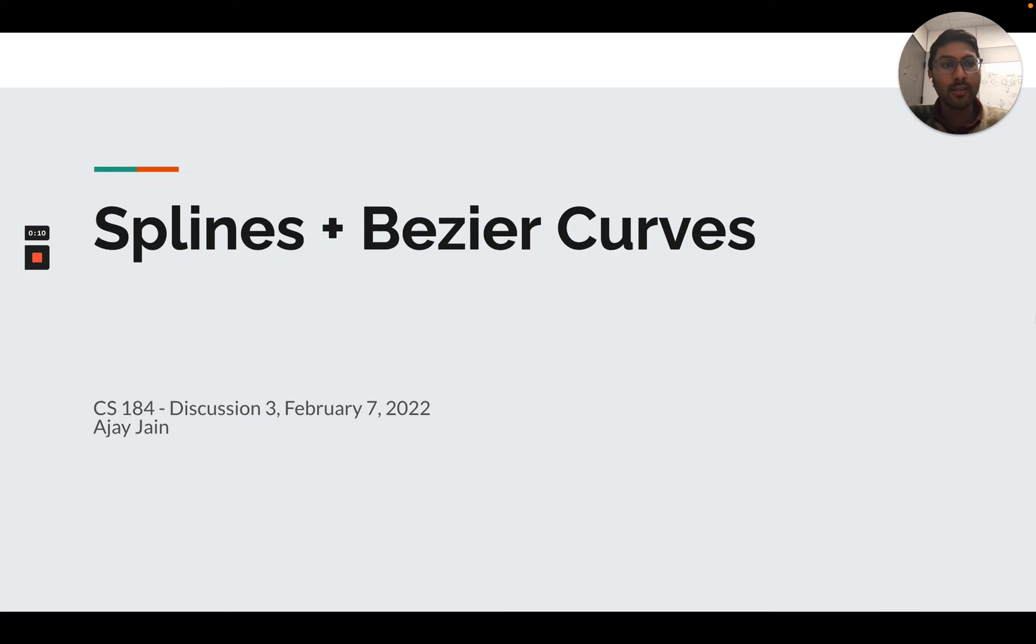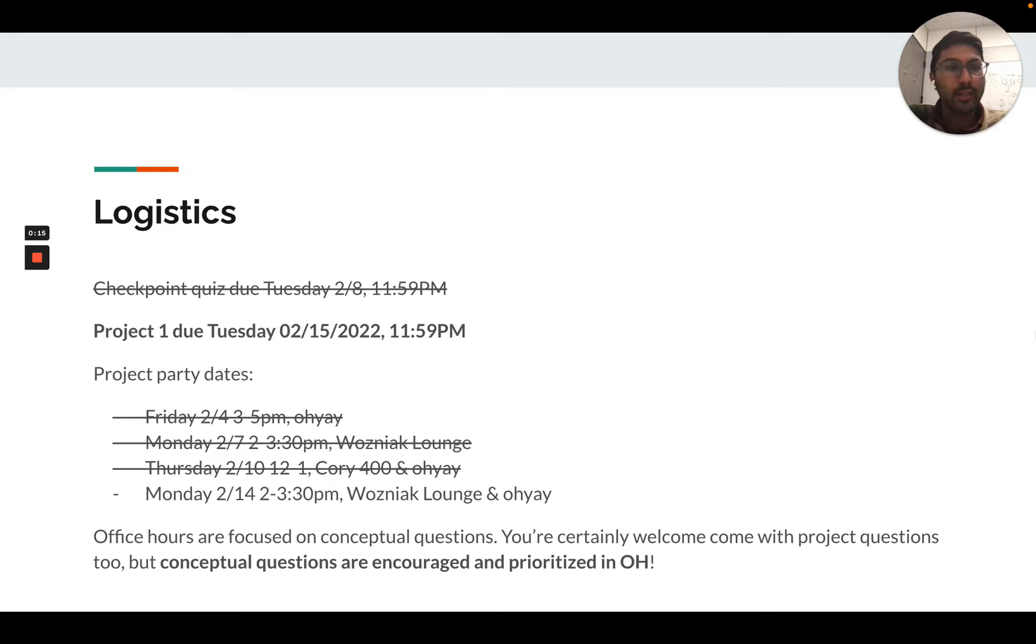For some quick logistics, a reminder that Project 1 is due next week on Tuesday. There's one last project party to help you out on Monday, 2 to 3:30 pm, both in person and online. You can also come to office hours with project questions, but we will prioritize conceptual questions like clarifying lecture material or talking about advanced graphics concepts in office hours.